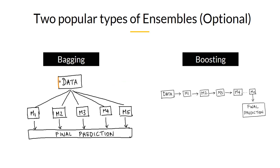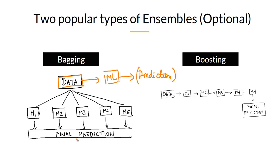In bagging, instead of building one single ML model from the dataset to give you the prediction, you still get only one final prediction — but this final prediction actually comes from multiple different machine learning models. These are all different machine learning models and typically a lot of them will be involved.